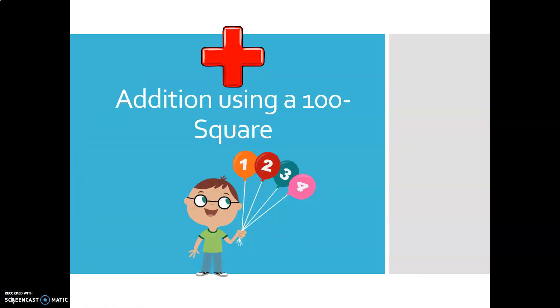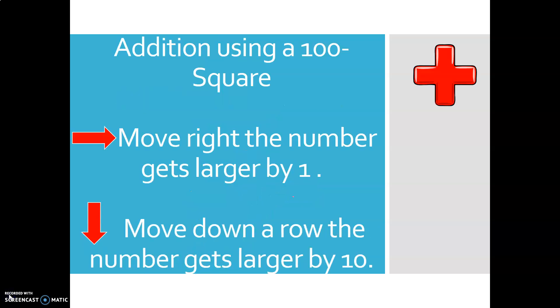Addition using the 100 square. So just to recap addition using a 100 square: if you move to the right, the number gets larger by 1. You're adding 1. And if you move down a row, the number gets larger by 10.